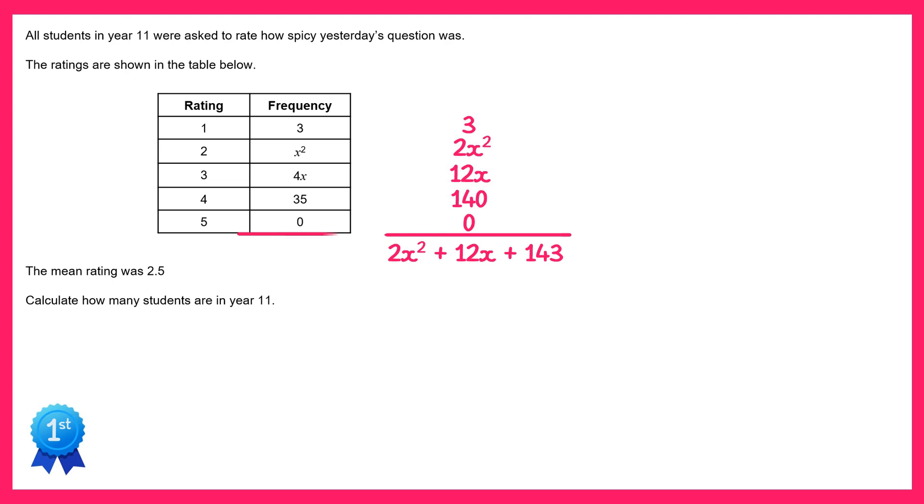Next up we'll add up the frequency column, this will give us the total number of all students. So that's x squared plus 4x plus 38.